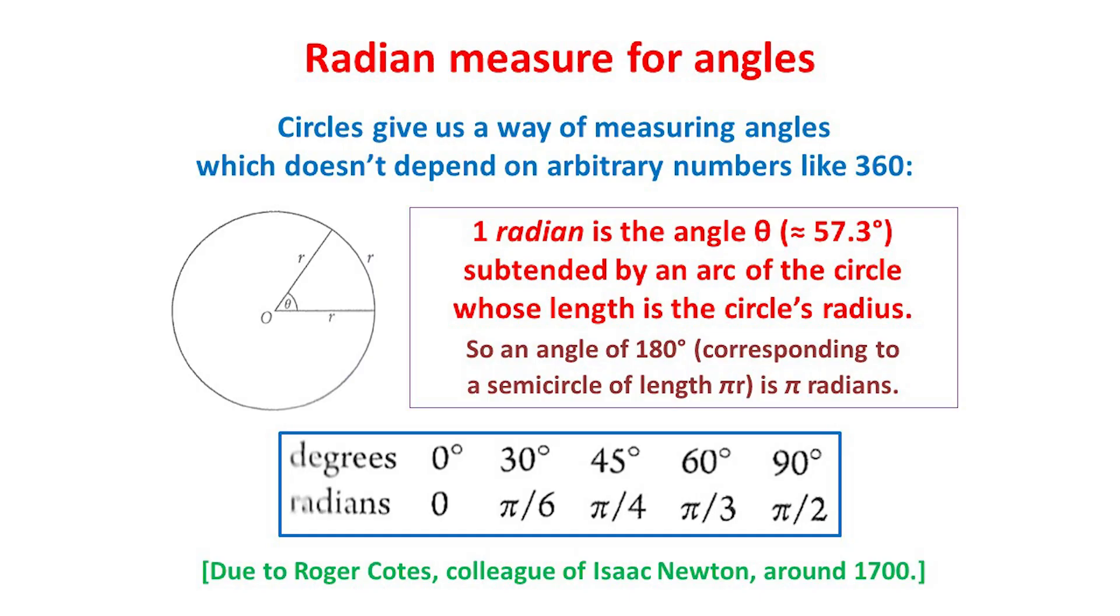And it follows that an angle of 180 degrees, which corresponds to a semicircle of length πr, is equal to π radians. And some other values are given in the table shown here. As we'll see, using radians instead of degrees makes many mathematical results easier to state and prove.